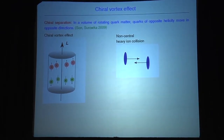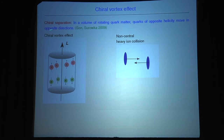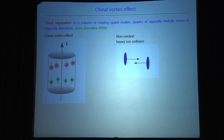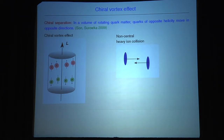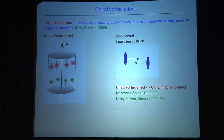This leads to something called the chiral vortex effect. It has the effect of a chiral separation: if you have a volume of rotating quark matter, this term implies that quarks of opposite helicity have to move in opposite directions — left-handed particles go along the angular momentum and right-handed ones go in the other direction. This may actually happen in a heavy-ion collision because due to the non-centrality of the collisions, angular momentum occurs. The closely related chiral magnetic effect — where a magnetic background field generates charge separation — is certainly under experimental investigation in current heavy-ion experiments.